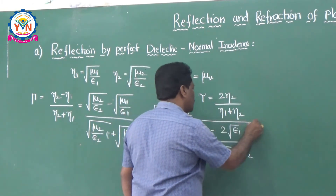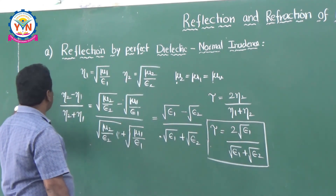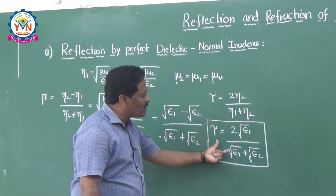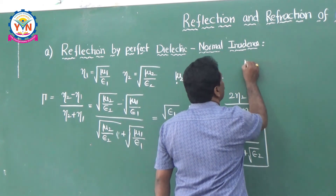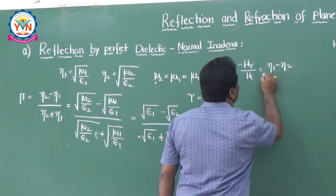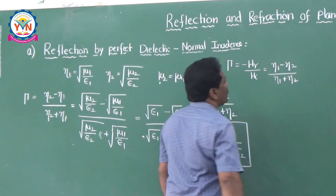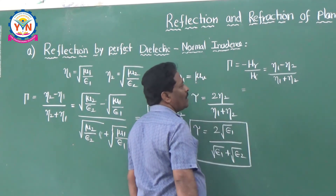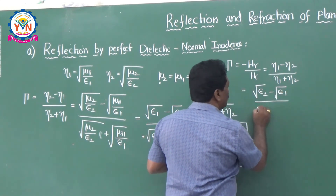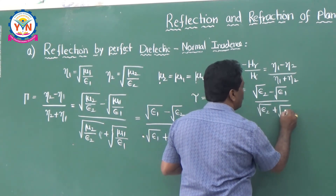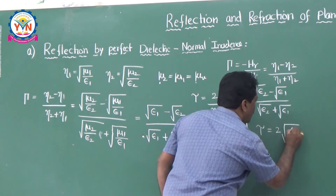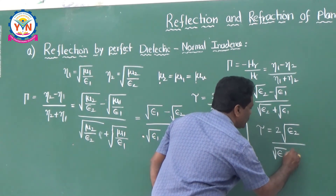The reflection coefficient is expressed in terms of the permittivities of the media. The dependence is only on the permittivities — if you know epsilon 1 and epsilon 2, you can calculate the reflection coefficient. Similarly, the transmission coefficient tau equals 2 root epsilon 1 divided by (root epsilon 1 plus root epsilon 2).